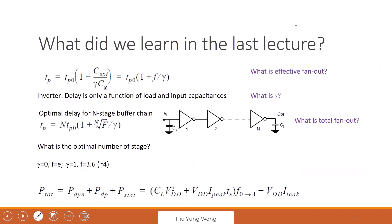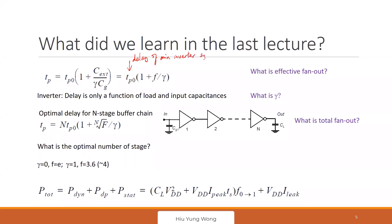Let's go back to what we learned last time as a summary. Last time we talked about this equation. I really hope that you can memorize this one. What is TP0? This is about the delay of a gate, of an inverter. TP0 is the minimum size delay — the delay of a minimum size inverter with symmetric VTC.